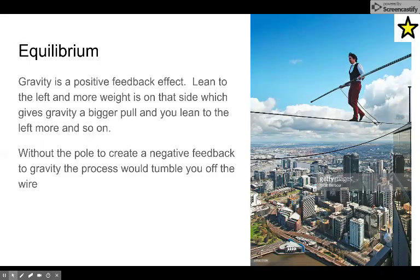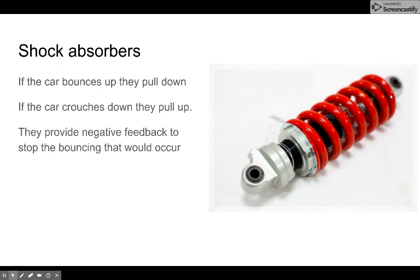This person has to deal with the fact that if he leans to the right, gravity will pull harder on that side and accelerate him off. Instead, he creates his own negative feedback — if he starts leaning to his right, he simply has to extend the pole or tip it left to create a feedback in the other direction. Shock absorbers in your car are designed for negative feedback: when the car bounces up, they pull the opposite way; when the car crouches down, they push up to cancel the bouncing action.